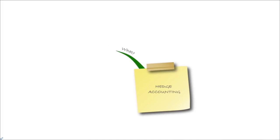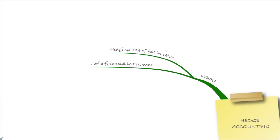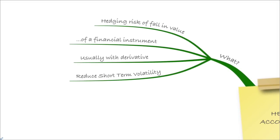So what are we actually talking about here with hedge accounting? We're hedging the risk of a fall in value of a financial instrument, usually with derivatives. We have some item that we think is going to change in value and we're worried about it, so we're going to hedge that risk — and that will reduce short-term volatility. If we meet certain criteria, we can usually offset the two movements in profit or loss. Otherwise we just have two items treated separately in the financial statements, whereas with hedge accounting we can offset them and show the reasons why we did it.